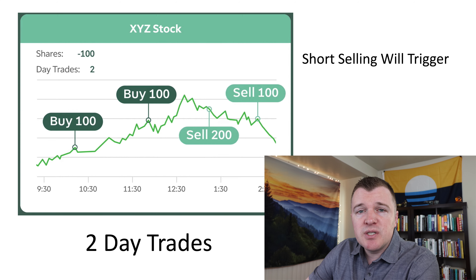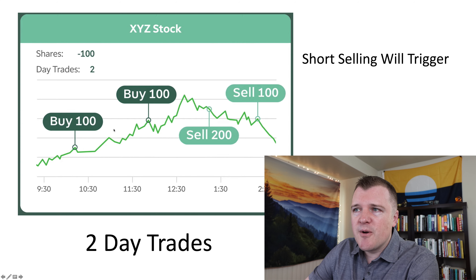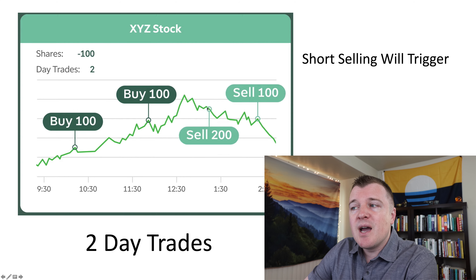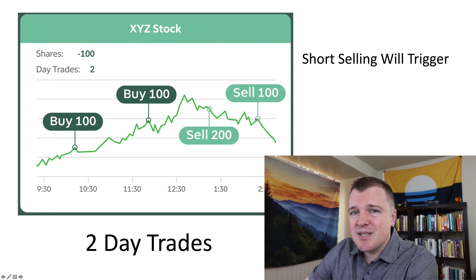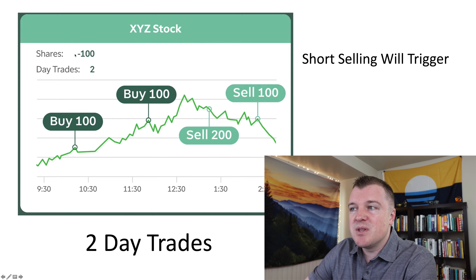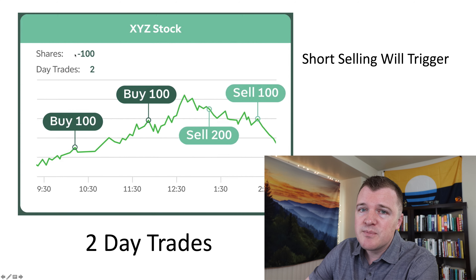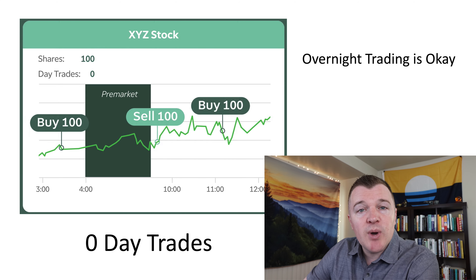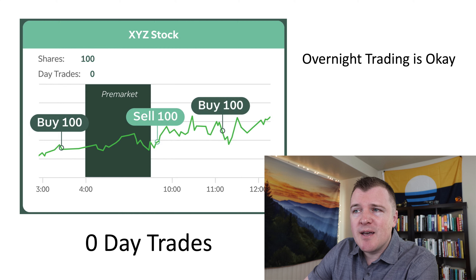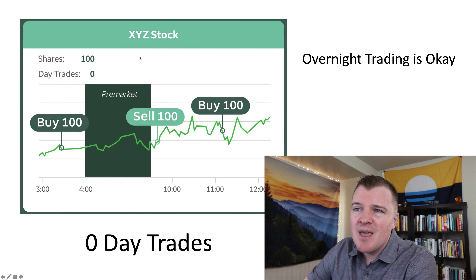The same is true for multiple selling in a single day. If you were to buy into a position of $300 and then start selling out 100 at a time, this only counts as one day trade because it's one buy and one sell in a calendar day. Where it gets interesting is if you do short selling. Let's say you buy in 100, buy in 100, then sell those 200 positions, and then the same day you do a short sale. That is technically two buys and two sells — even though you're now negative 100 shares from the short sale — and this will count as two day trades.